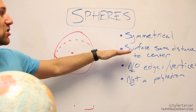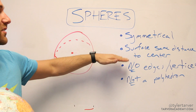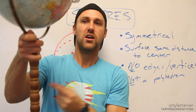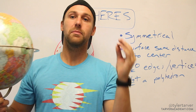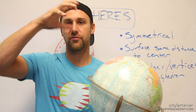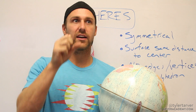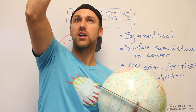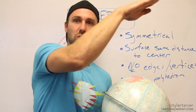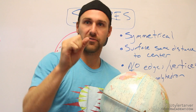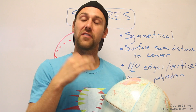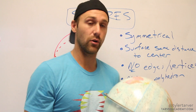The next property is that the surface is the same distance to the center. That means you can take a point on any part of the entire surface and it's going to be the exact same distance to the very center. Say the center to the edge is 10 feet — every time you go from the center to one of the edges, you'll hit exactly that distance. If it varies, it's not a perfect sphere.